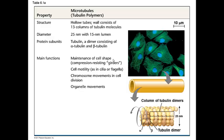The microtubules are the widest of the polymers with a diameter of about 25 nanometers. The microtubules are actually hollow cylinders that are made up of combinations of tubulin dimers, tubulin being the protein that microtubules are made out of. They're primarily involved in maintaining cell shape, involved in cell motility in the context of cells that move via cilia or flagella, involved in forming the spindle and moving the chromosomes, and also involved in movement of organelles.